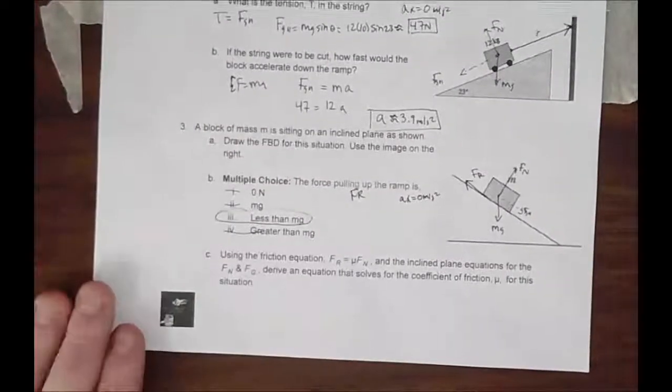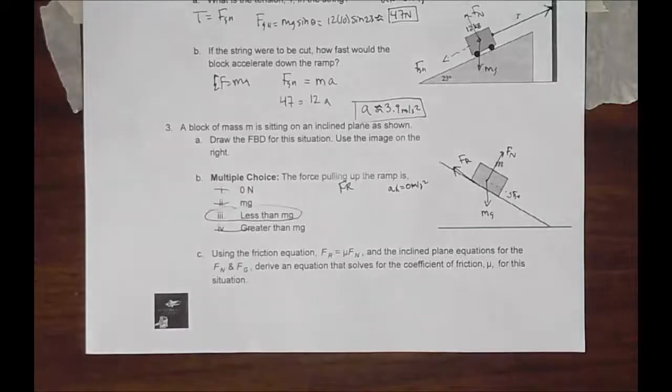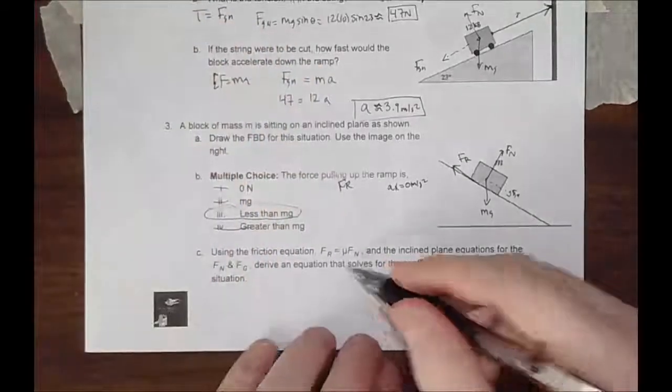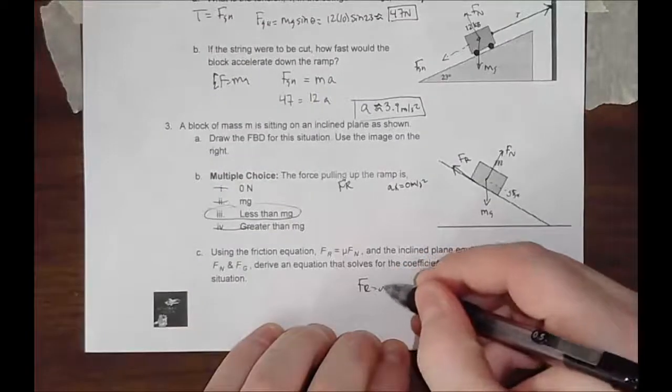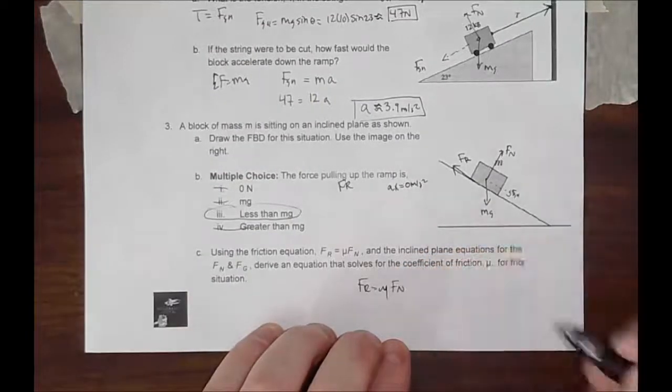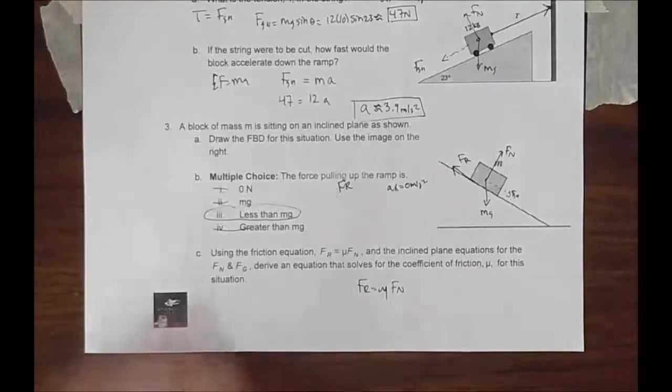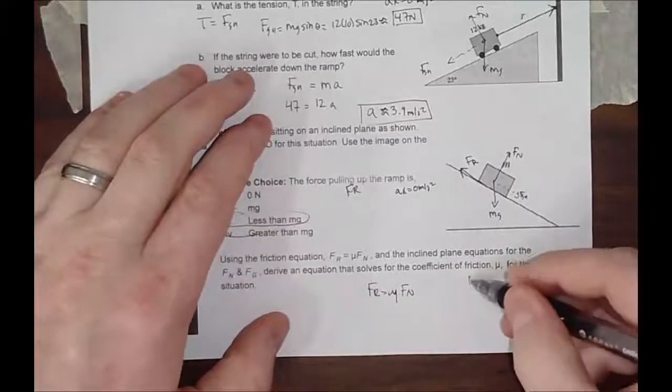And the final one is, derive an equation to solve for the coefficient of friction mu. If we know friction, FN, and we know the equations for these, we know friction is mu FN.